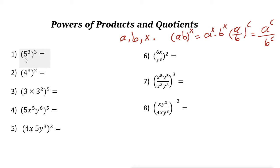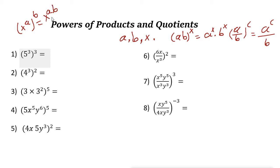Let's take a look at some examples. The power of a power rule: (X^a)^b equals X^(a·b). So if you have X to the power of A, and the whole thing to the power of B, it equals X to the power of A times B — you multiply the exponents.